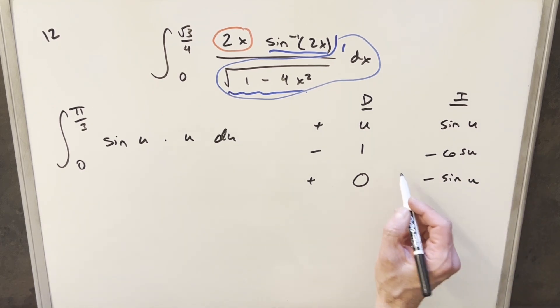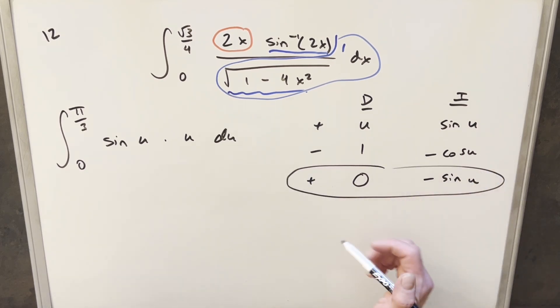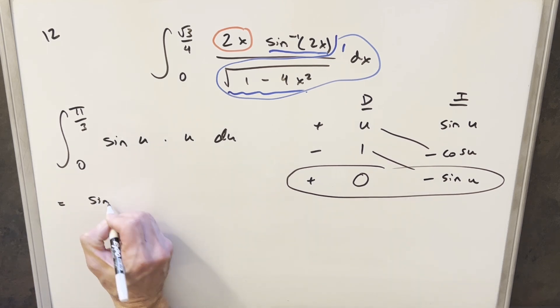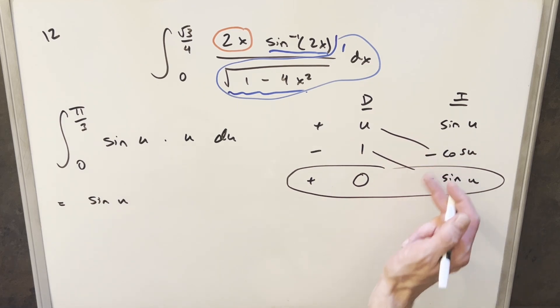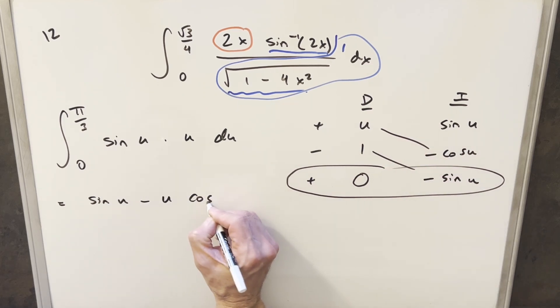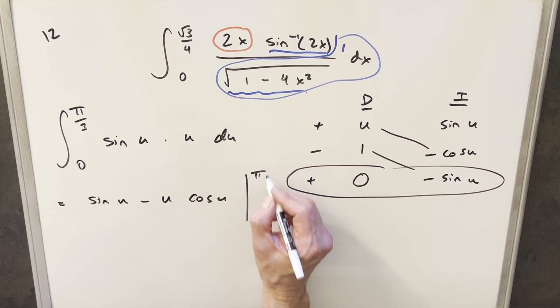Now because we have this 0 here, we don't have to worry about integrating the last row. So we just can take our solution here on the diagonals. I think I'll start with this second one. So we have minus times minus is a plus. So for our first term we're going to have just sine of u, and then for this other one we're going to have minus u cosine of u. And we just need to evaluate this from 0 to pi over 3.